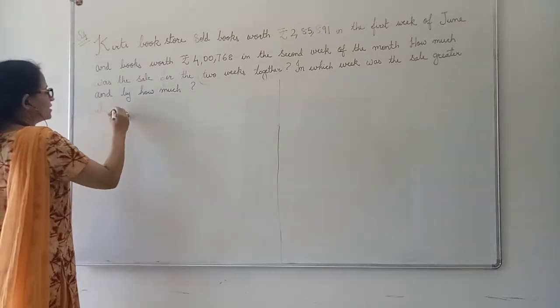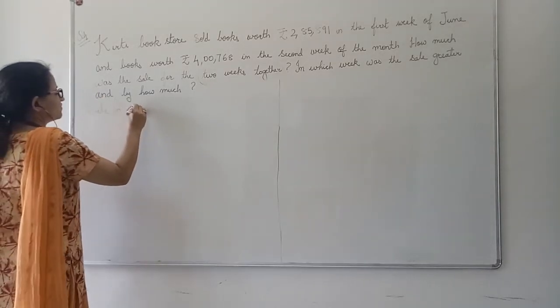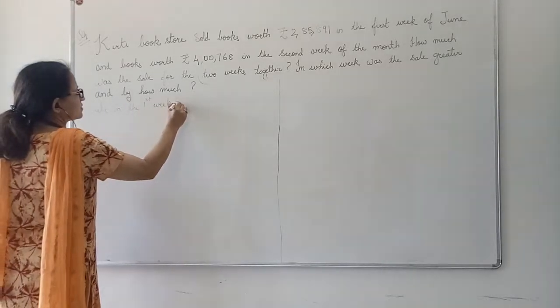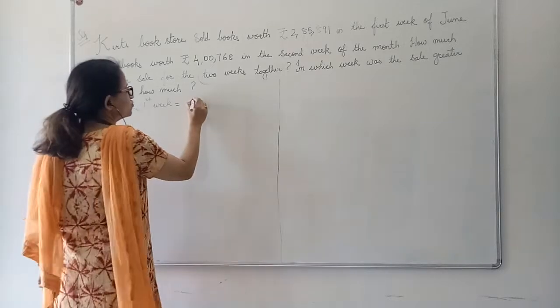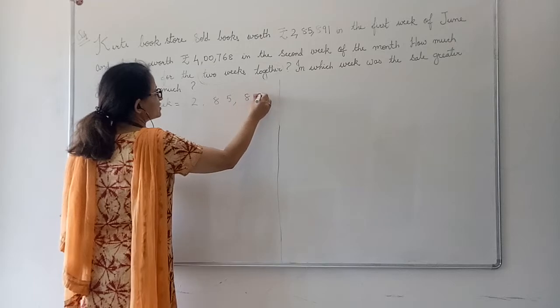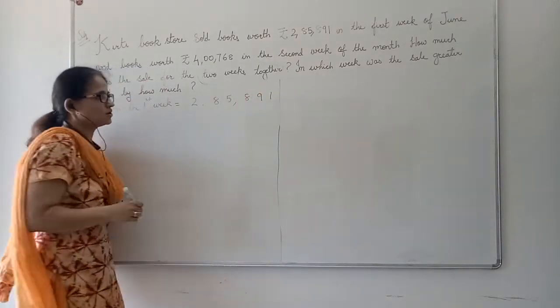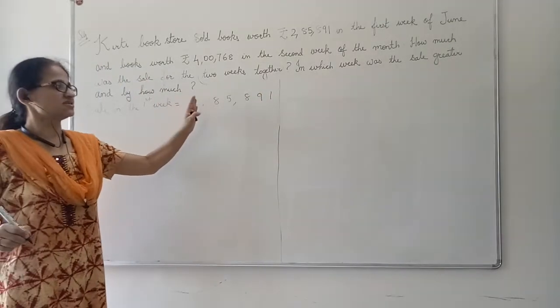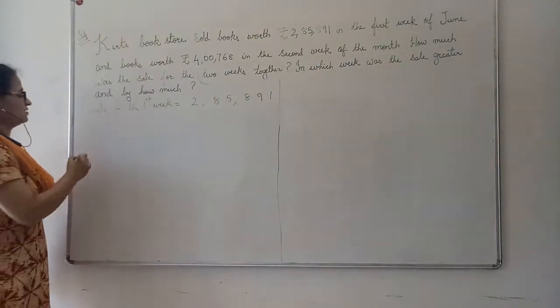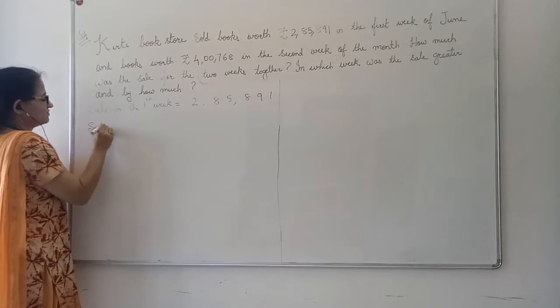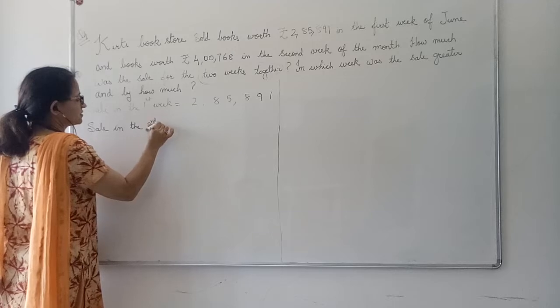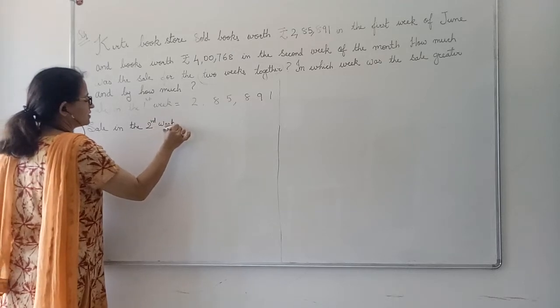Sale in the first week. It is 2,85,891. We will write the digits, keeping some distance, keeping some gap between them. Sale in the second week. We will write sale in the second week.